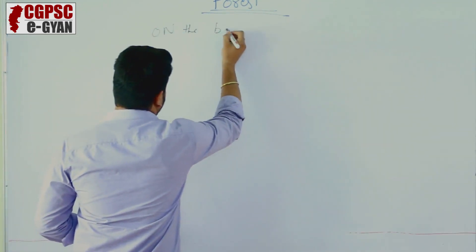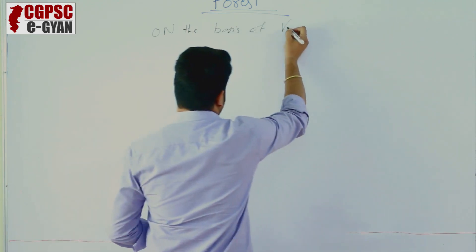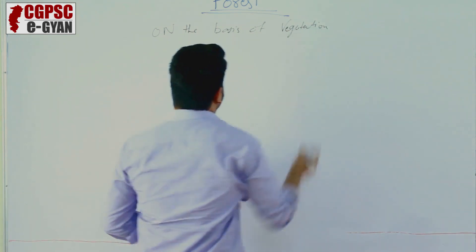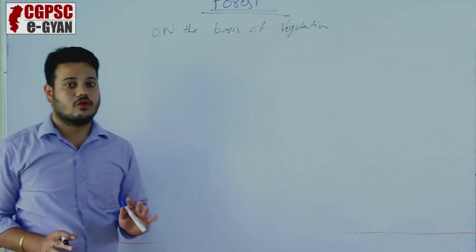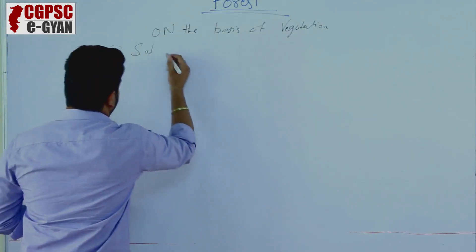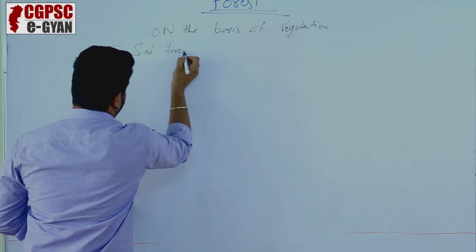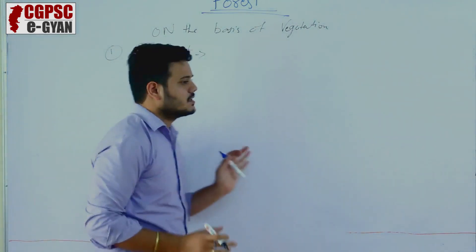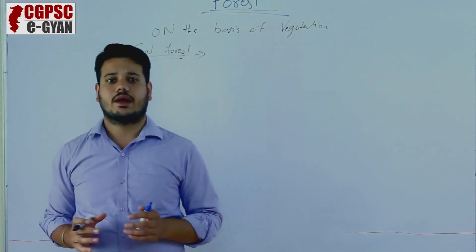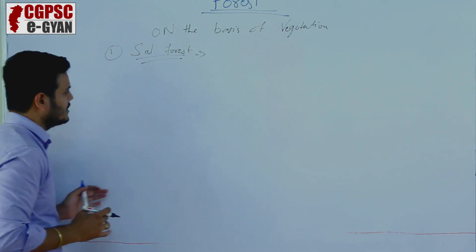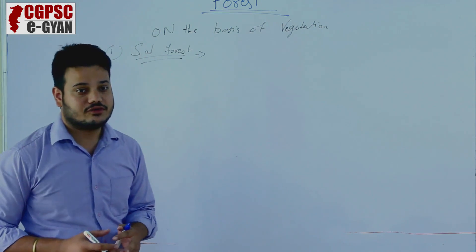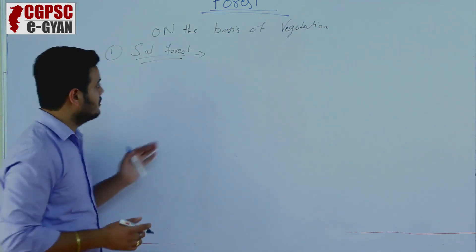On the basis of vegetation, Chhattisgarh's forests can be divided into four parts. The first one is the Sal forest. This is a very important forest area, found mainly in northern and southern Chhattisgarh, and is associated with island-type soil forest conditions.